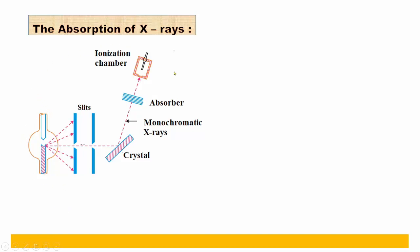This is the figure of absorption of x-rays. The setup consists of an x-ray tube, two slits whose function is to pass a beam of x-rays, and a crystal on which the x-ray beam is incident. The crystal is kept in an inclined position, and this is the absorber through which x-rays can pass. In this space, there is an ionization chamber having a cylindrical shape.